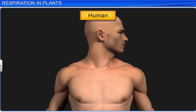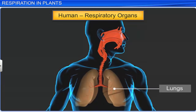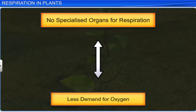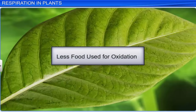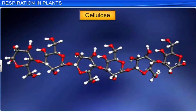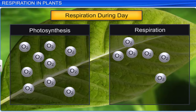While humans use their respiratory organs to take in oxygen, plants have no such specialized organs. This is because plants utilize less oxygen for the oxidation of food. Plants utilize only a small amount of food for oxidation, and the rest is used in building their body in the form of cellulose. Further, the demand for oxygen is supplied during photosynthesis, where oxygen is an end product.